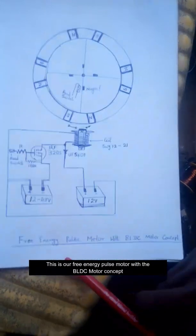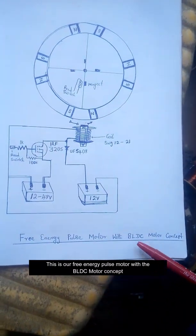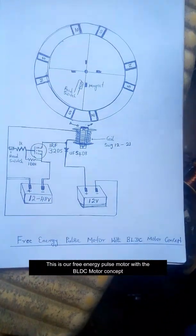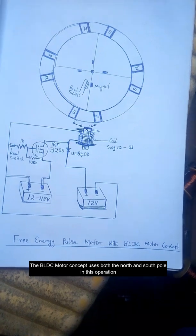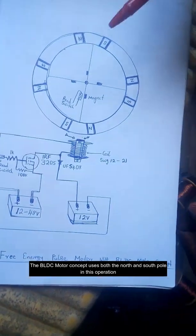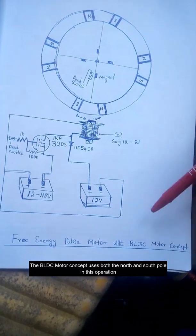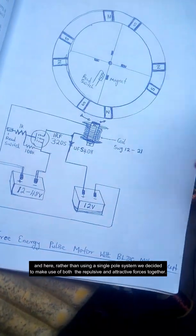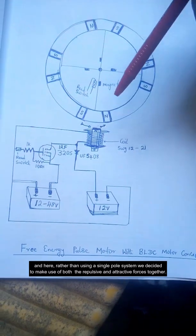This is our free energy pulse motor with the BLC motor concept. The BLC motor concept uses both the north and the south pole in its operation. Here, rather than using a single pole system, we decided to make use of both the repulsive and the attractive forces together.